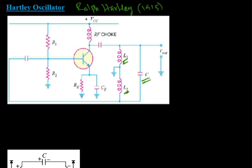All the rest of the circuit is exactly similar to the Colpitts oscillator. When VCC is switched on, the DC voltage flows through the RF coil and charges capacitance C. After the capacitor is fully charged, it discharges through L1 and L2. The output voltage Vout appears across inductance coil L1, and the voltage appearing across inductance L2 serves as the feedback voltage. The output voltage has a 180-degree phase difference due to the transistor action.